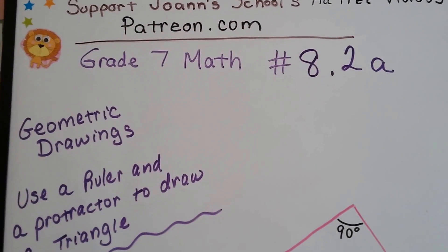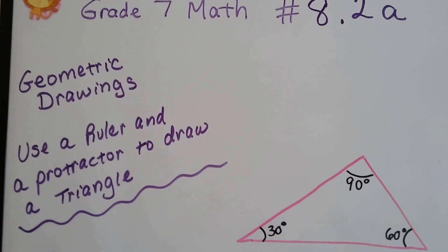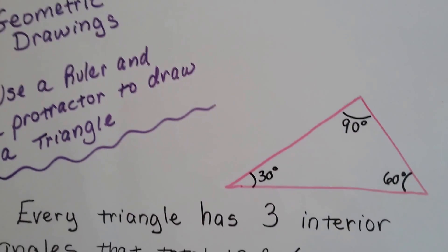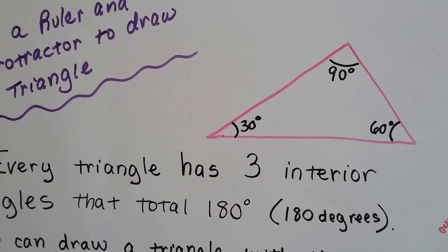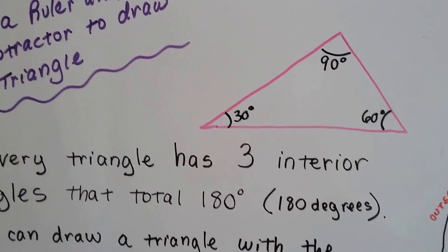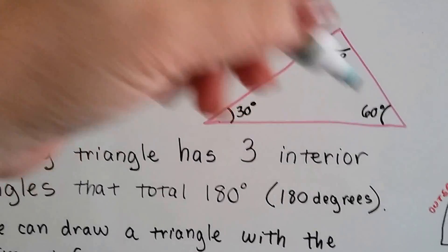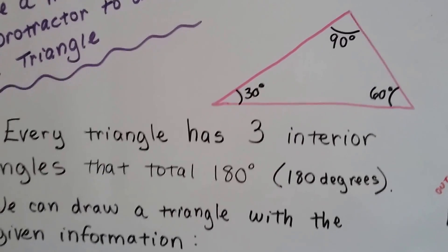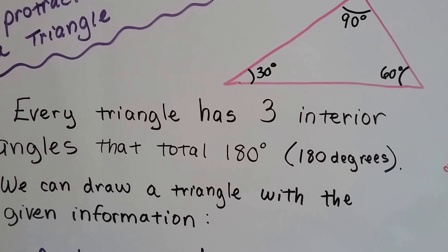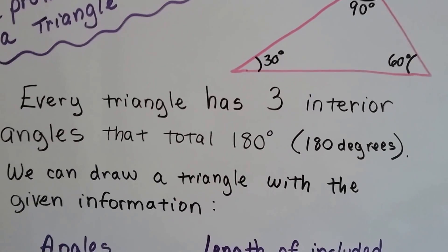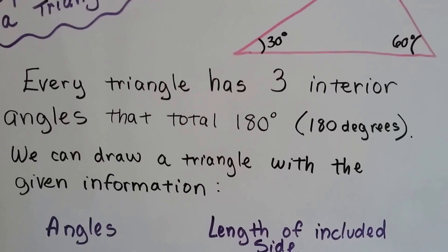Grade 7 math number 8.2a: geometric drawings. Use a ruler and protractor to draw a triangle. See our pink triangle here? All the interior angles are 180 degrees. If we added up the 30, 90, and 60, it would be 180. Every triangle has three interior angles that total 180 degrees, and we can draw a triangle with given information.